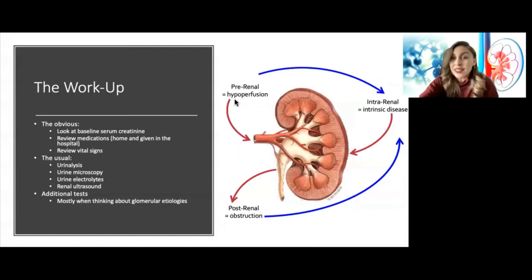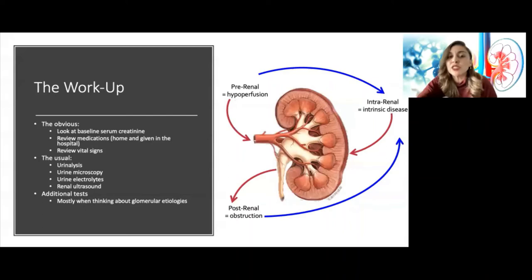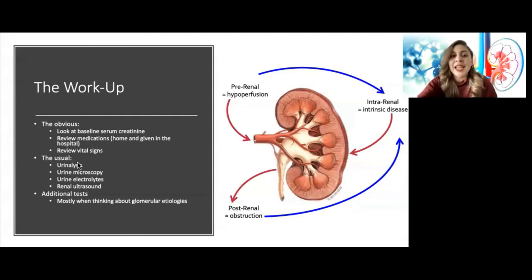A lot of these things can be gathered from just the clinical history. The obvious workup involves looking at the baseline creatinine, reviewing medications — especially what's been going on in the hospital if this is inpatient — looking at recent events for clinic patients, and checking vital signs, trending blood pressures, and trending weights. All of that can give a lot of good information about what may be going on with the kidney.